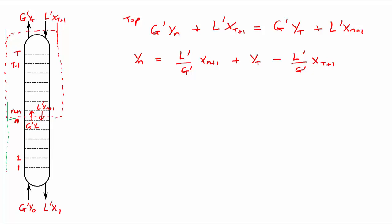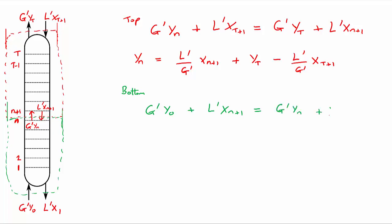We can also look at a balance for the bottom of our column. Taking the bottom section: what goes in is G prime times the Y fraction entering our column, plus L prime times X_(N+1). That equals what goes out: G prime times Y_N plus L prime times X_1. Rearranging in terms of Y_N, we get Y_N equals (L prime / G prime) times X_(N+1) plus Y_0 minus (L prime / G prime) times X_1.